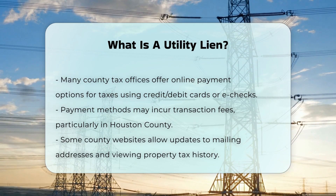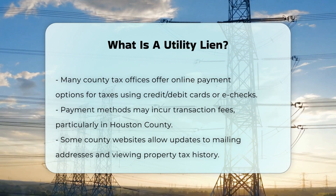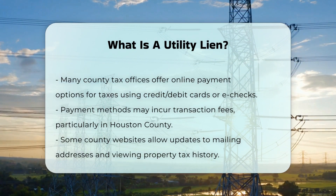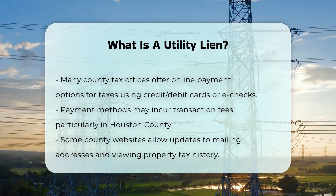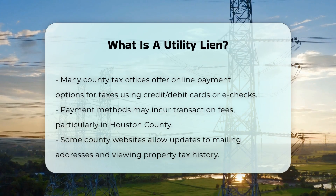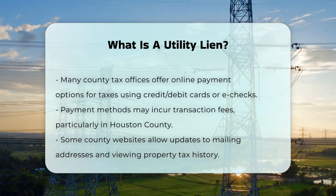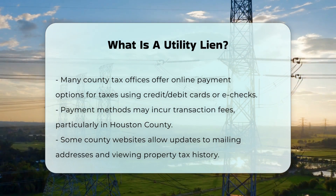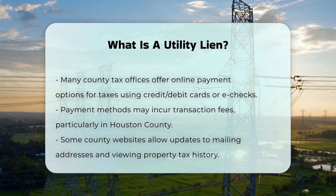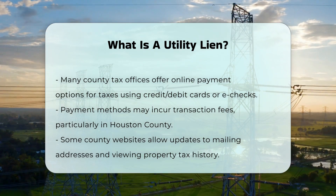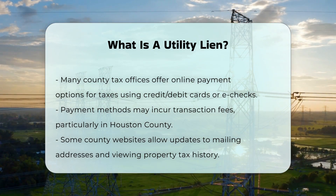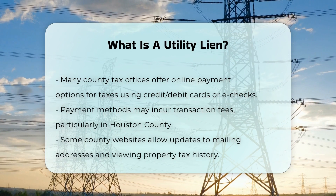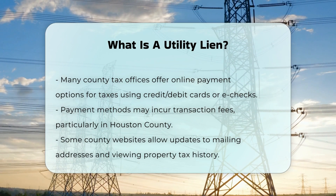Additional Considerations: When dealing with a property that has a utility lien, it is crucial to check for other hidden liens, such as those for property taxes, IRS debts, child support, or other types of liens. This ensures that there are no additional financial burdens that could impact the profitability of the property.